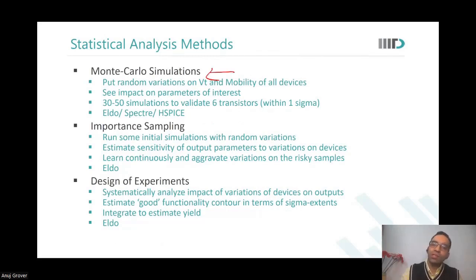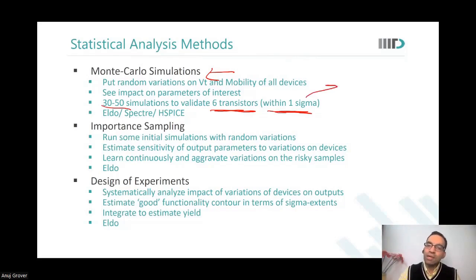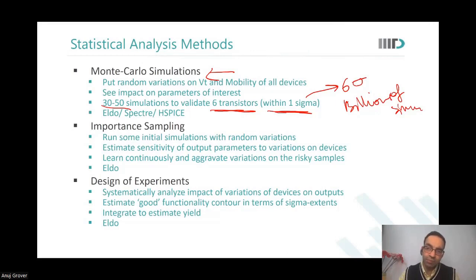In terms of statistical analysis, Monte Carlo simulations are something you already know about. To qualify a six-standard-deviation memory cell within one sigma range, you need 30 to 50 simulations. But if you have to go to six sigma qualification, you will need billions of simulations — this is prohibitive. So there are other methods introduced which are not just brute-force Monte Carlo simulations.